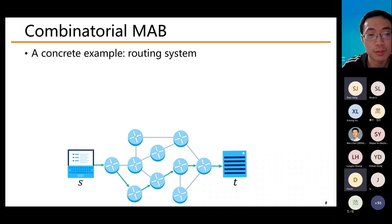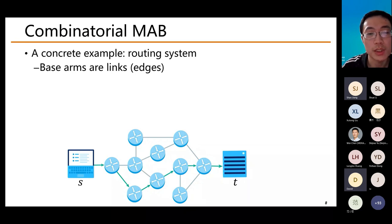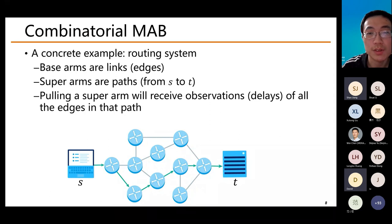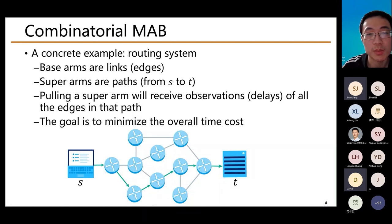A simple real-world example is a routing system. Consider a system where point S keeps sending messages to point T. We treat the links or edges as base arms — the basic units. The superarms are all paths from S to T. Once you pull a superarm, you receive observations of delays for all edges in that path — this is the semi-bandit observation rule. Your goal is to minimize the overall time cost, which is the same as minimizing regret.